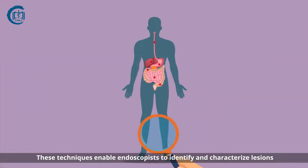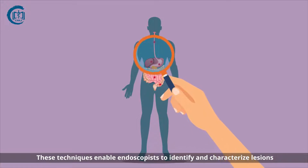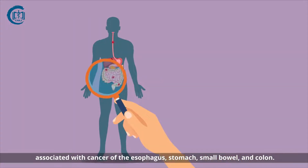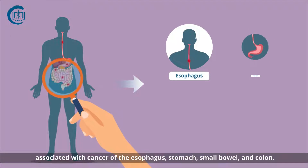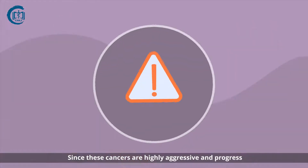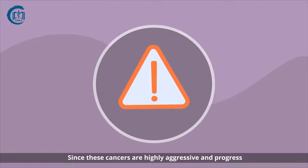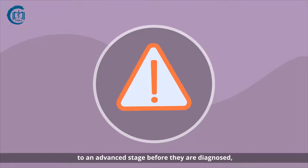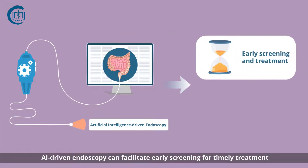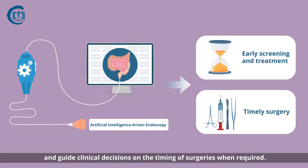These techniques enable endoscopists to identify and characterize lesions associated with cancer of the esophagus, stomach, small bowel, and colon. Since these cancers are highly aggressive and progress to an advanced stage before they are diagnosed, AI-driven endoscopy can facilitate early screening for timely treatment and guide clinical decisions on the timing of surgeries when required.